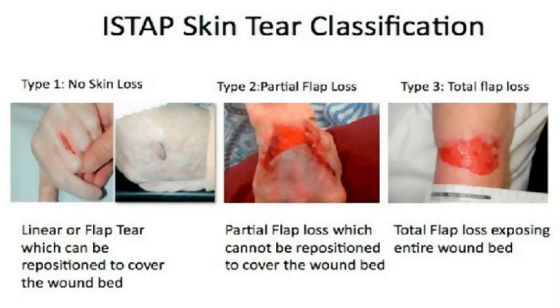A lot of times the flap will be peeled back, so you want to clean the wound really well with normal saline and use something like a Q-tip to try to pull it back into normal position. Most of the time it's not going to stretch right back across, but you want to get it as close as possible. There are different types of skin tears: Type 1 has no skin loss — it's either linear or a flap tear that can be repositioned to cover the entire wound bed. Type 2 is a partial flap loss, where the flap cannot be repositioned to cover the entire wound. Type 3 is a total flap loss, where the skin has completely peeled back and off.